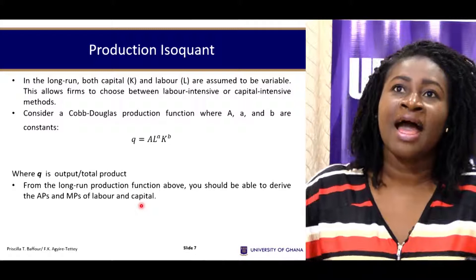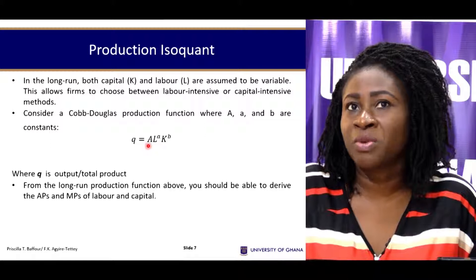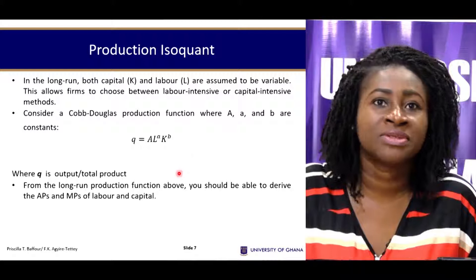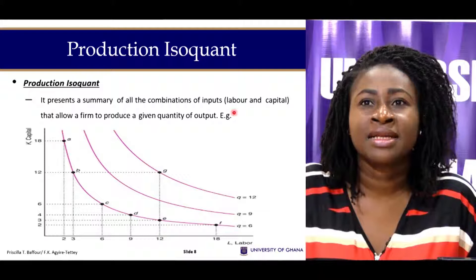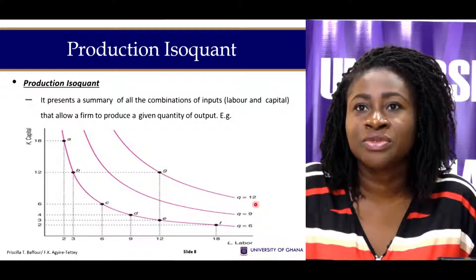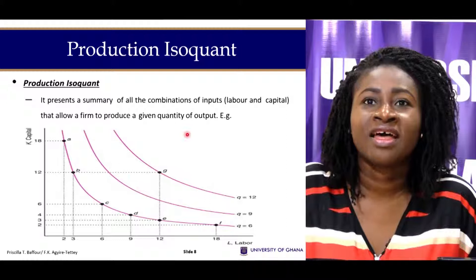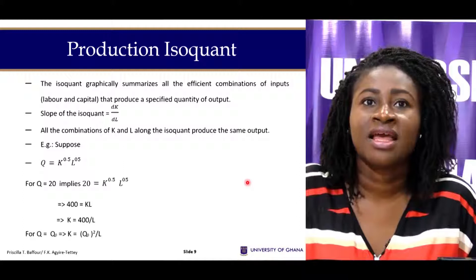In the long-run analysis, both capital and labor are variable. We have a typical Cobb-Douglas production function where Q is a function of labor raised to the power alpha and capital raised to the power beta. The production isoquant gives a summary of all combinations of inputs — labor and capital — that yield the same level of output. Q=6, Q=9, and Q=12 are produced, and the farther away from the origin an isoquant is, the greater the quantity produced.